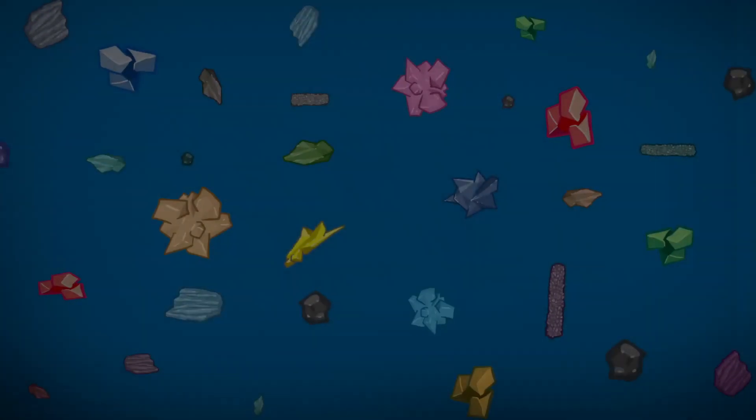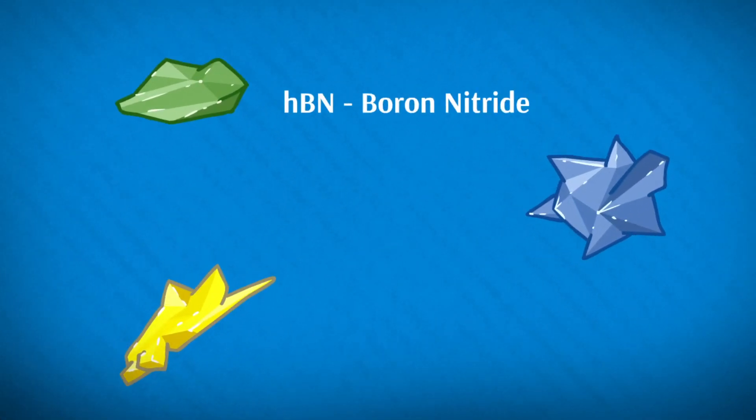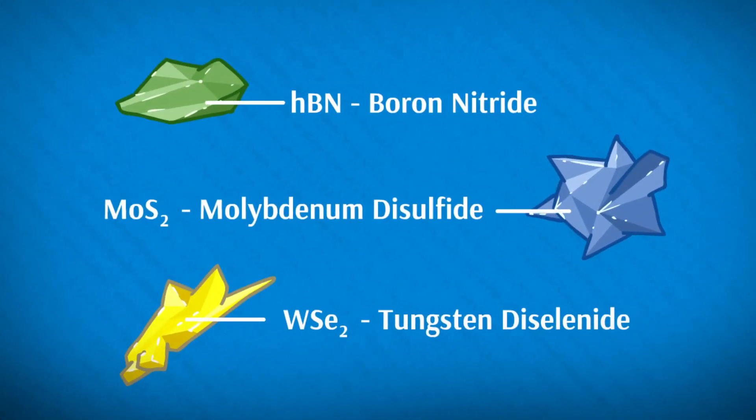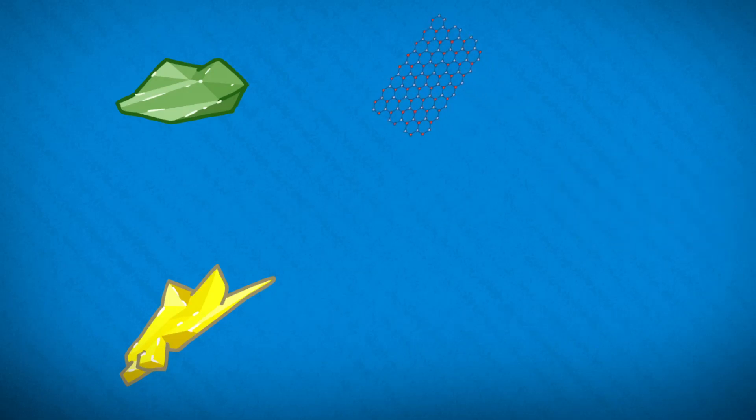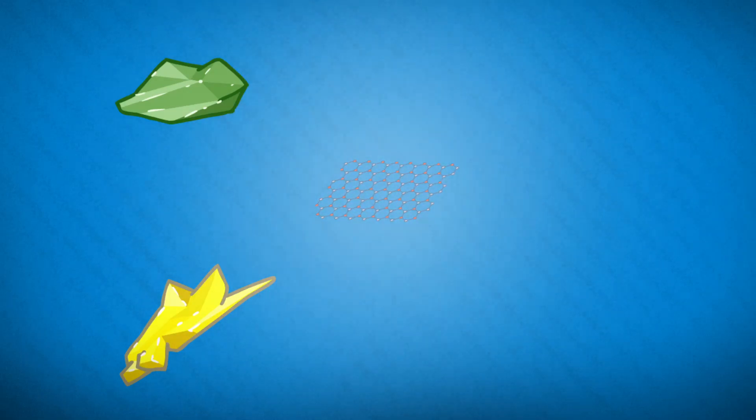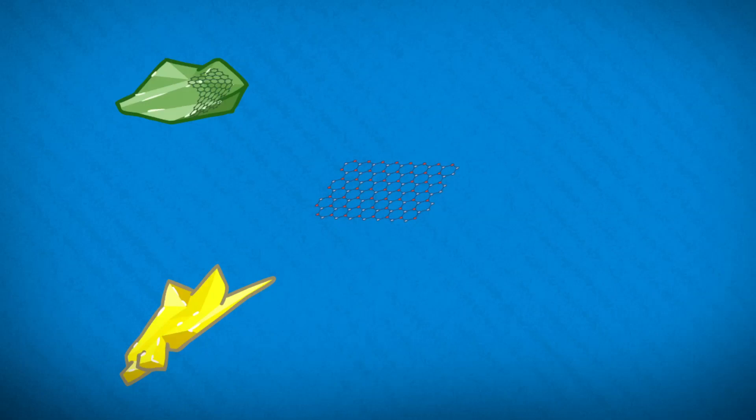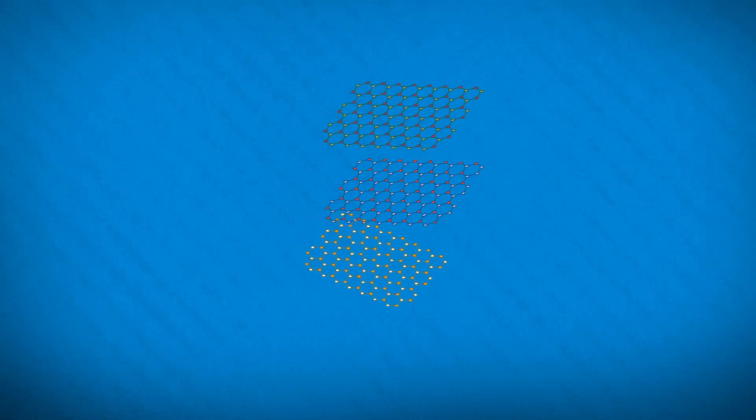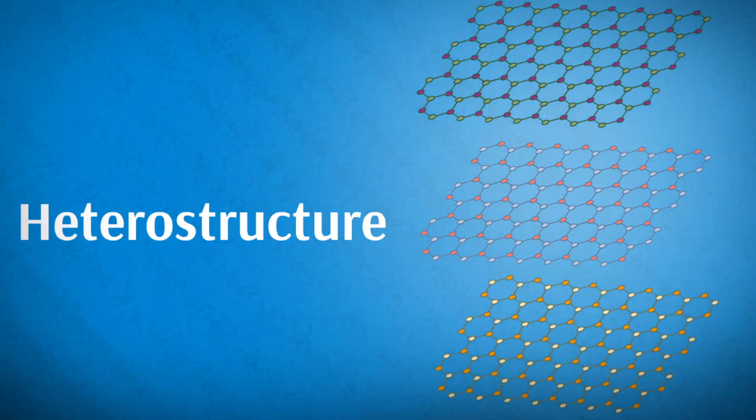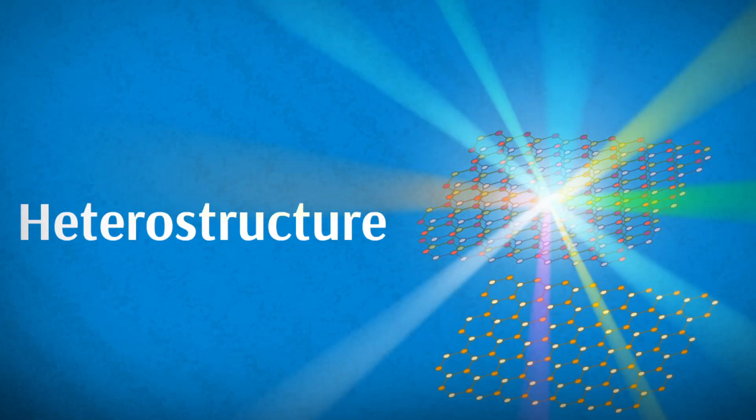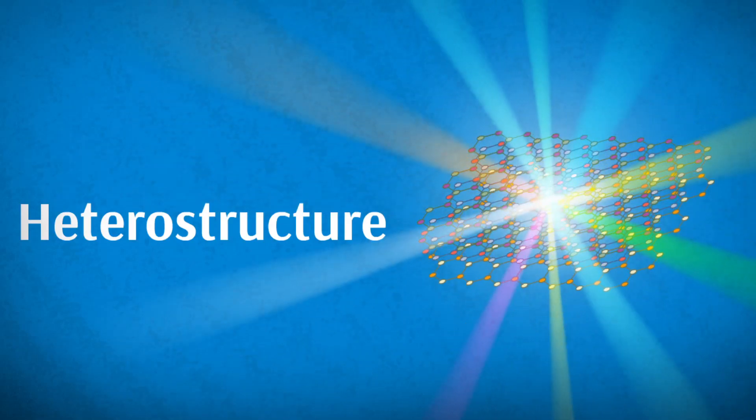However, beyond graphene, there is a large assortment of different crystals, each with their own unique and sometimes exotic behavior. Different crystal layers can even be precisely stacked to engineer so-called heterostructures, man-made crystals with electronic and optical properties not available in nature.